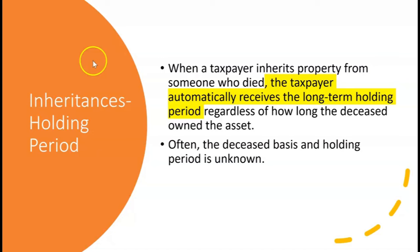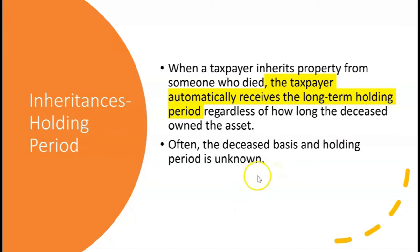The first thing to note is that when a taxpayer inherits property from someone who died, the taxpayer automatically receives the long-term holding period — regardless of how long the deceased owned the asset and regardless of how long the taxpayer owned the asset before they sold it. Often the deceased's basis and holding period are unknown, and that's why these automatic rules apply. When you inherit property, you get the long-term holding period, and this comes into play when there's a sale at a gain.